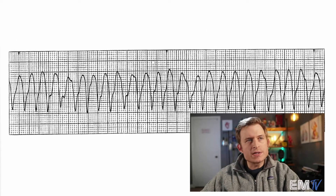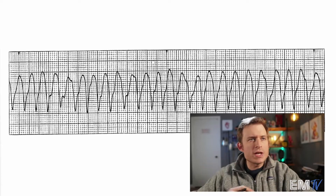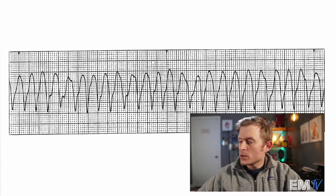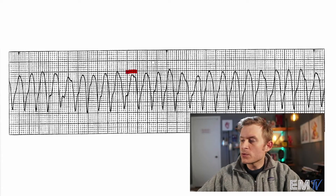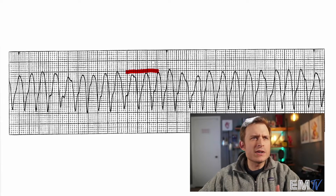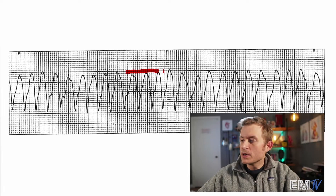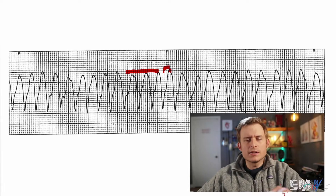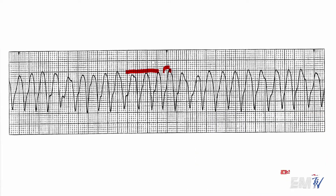Now I know a couple of you are wondering why isn't this a polymorphic VTAC — it almost looks like it's rotating a little bit like a torsades would. What you're seeing here is actually patient movement. The reason we know this is because the rhythm stays relatively underneath this reference line, but suddenly the rhythm is over the line, and underneath in certain areas. This leads me to believe it's caused by patient motion rather than actual twisting around the axis — that's why I'd call this one monomorphic. Let's look at the scenario and see if this patient is stable or unstable.